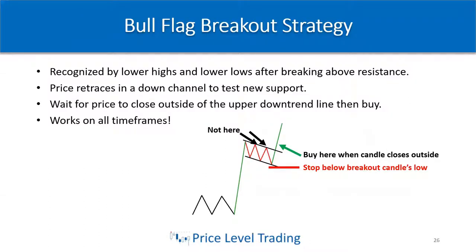A bull flag is recognized by lower highs and lower lows after breaking above resistance. I typically want to see this forming after we break above resistance — if it forms at lower resistance, the chances of breaking above aren't as high. Price will actually retrace in a down channel to test the new support — the older resistance that's now new support. You want to wait for price to close outside of that upper downtrend line, then buy.